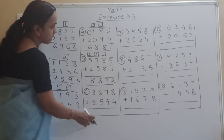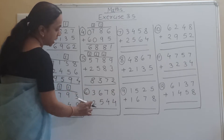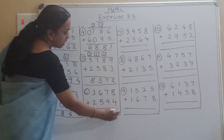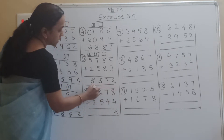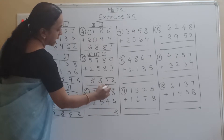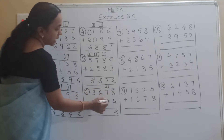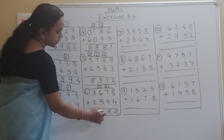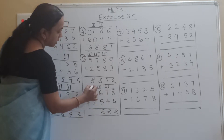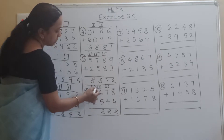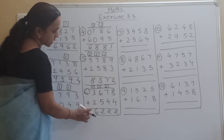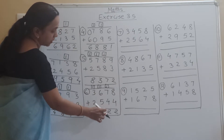Now see the sixth example: 3678 plus 2544. So 8 plus 4 is 12, carry 1. Write down carry 1. Then 7 plus 1 is 8, 8 plus 4 is 12, carry 1. Write down carry 1. Then 6 plus 1 is 7, 7 plus 5 is 12, carry 1. Write down carry 1. Then 3 plus 1 is 4, 4 plus 2 is 6. So the answer is 6222.